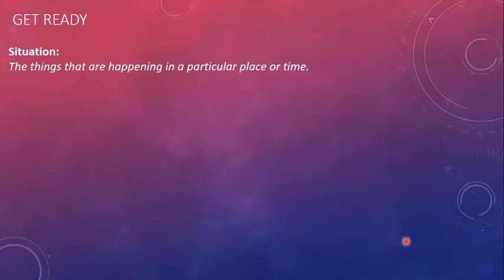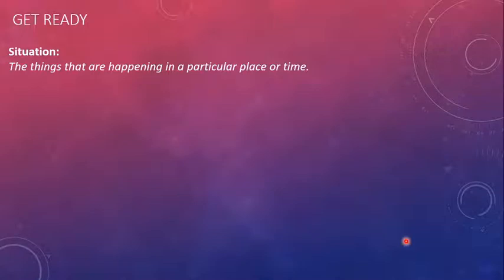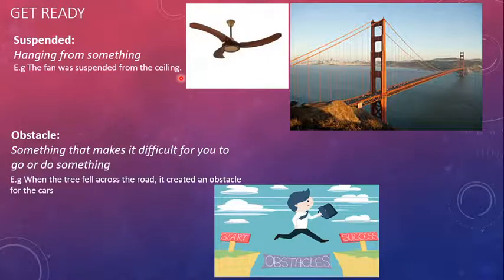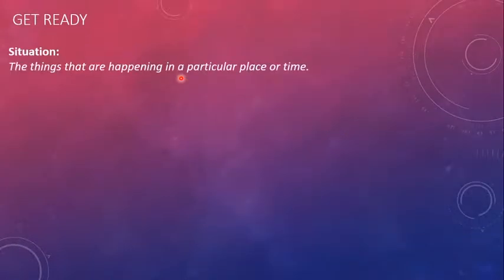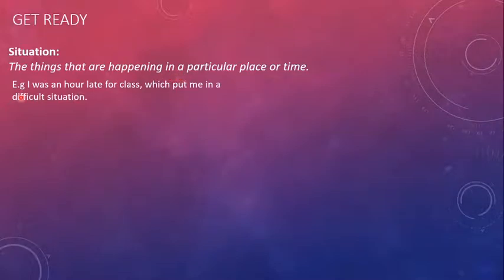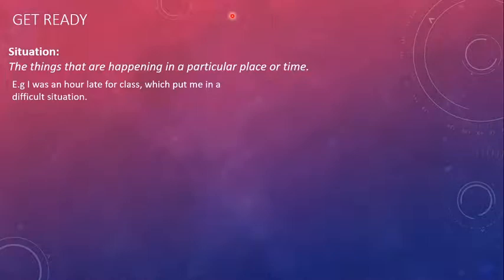The next word is 'situation.' Situation means circumstances or position — the things that are happening in a particular place or time. We have a crisis situation nowadays with the coronavirus all over the globe; we are in a very bad position. The example is: I was an hour late for class, which put me in a difficult situation. When a person is late for a class, he might not be allowed in, which is why the writer says it was a difficult situation.